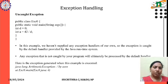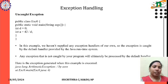Here we have an uncaught exception example. The public class name is Exe, with a main function — public static void main(String[] args). We declare int d equal to 0, and int a equal to 42 divided by d. In this example we have not supplied any exception handler of our own.